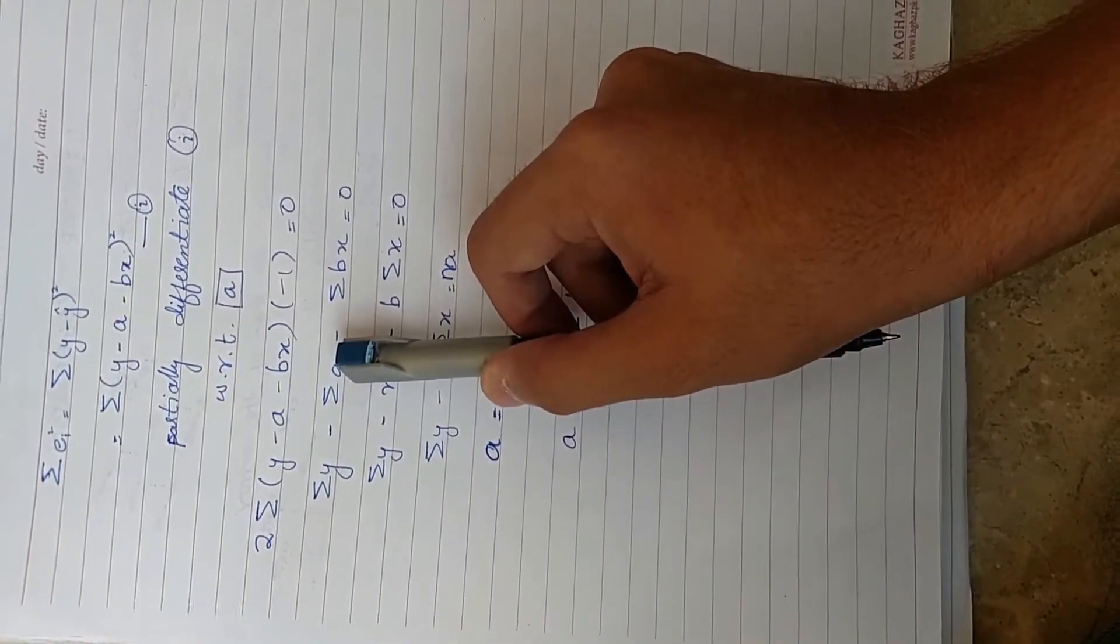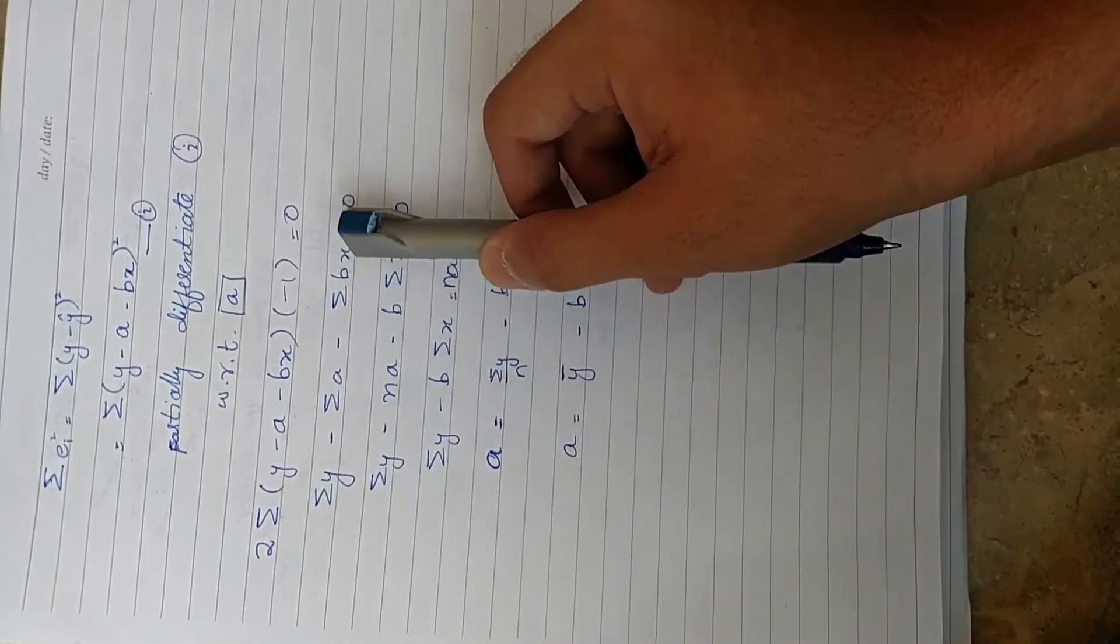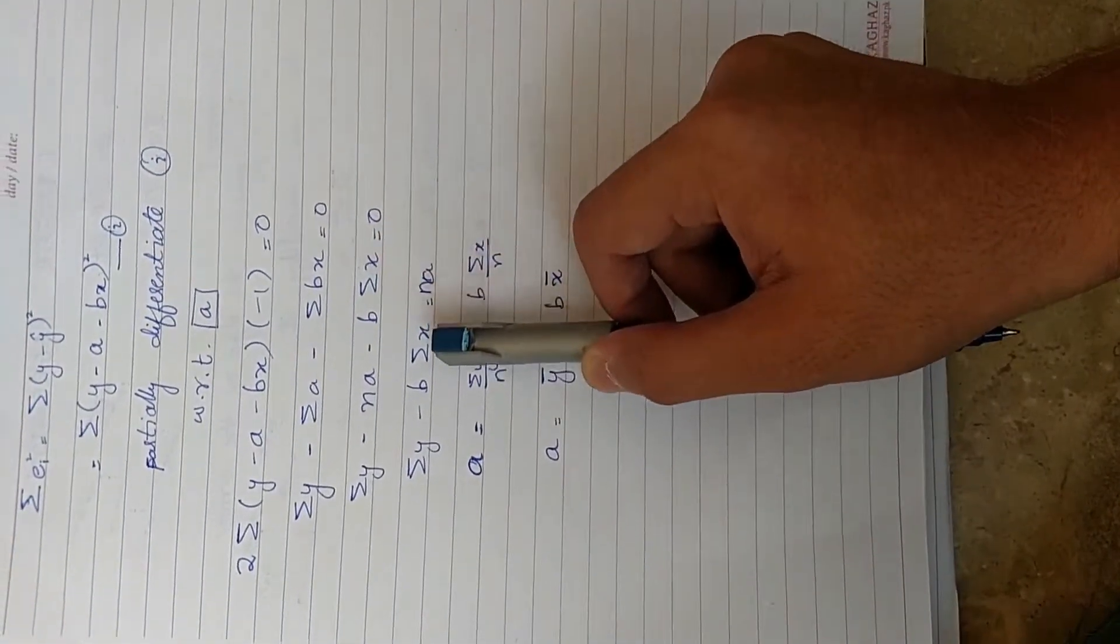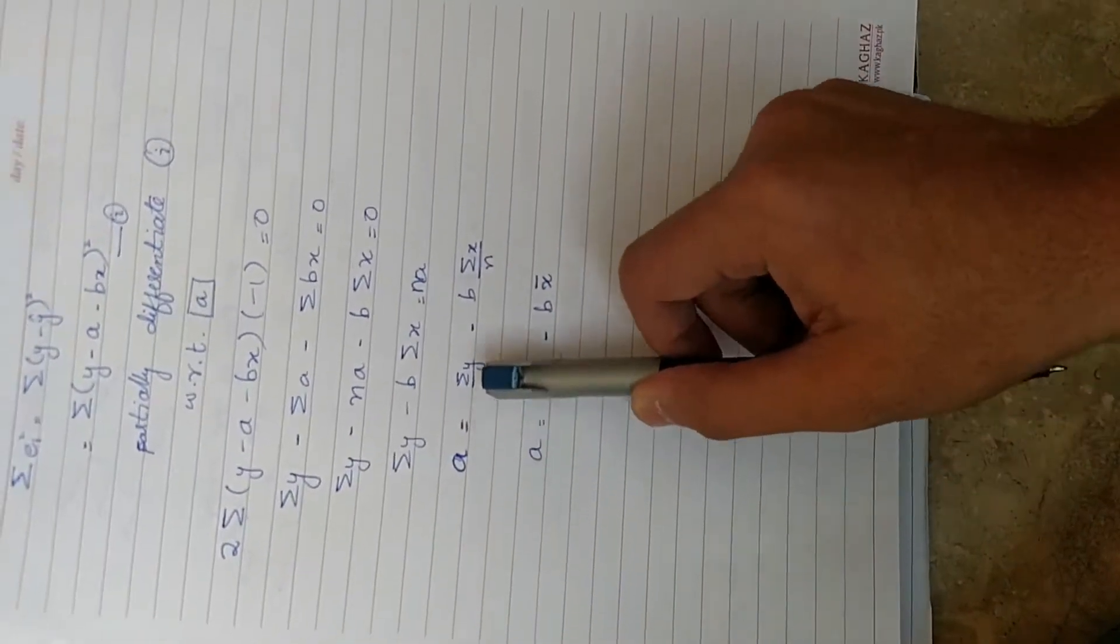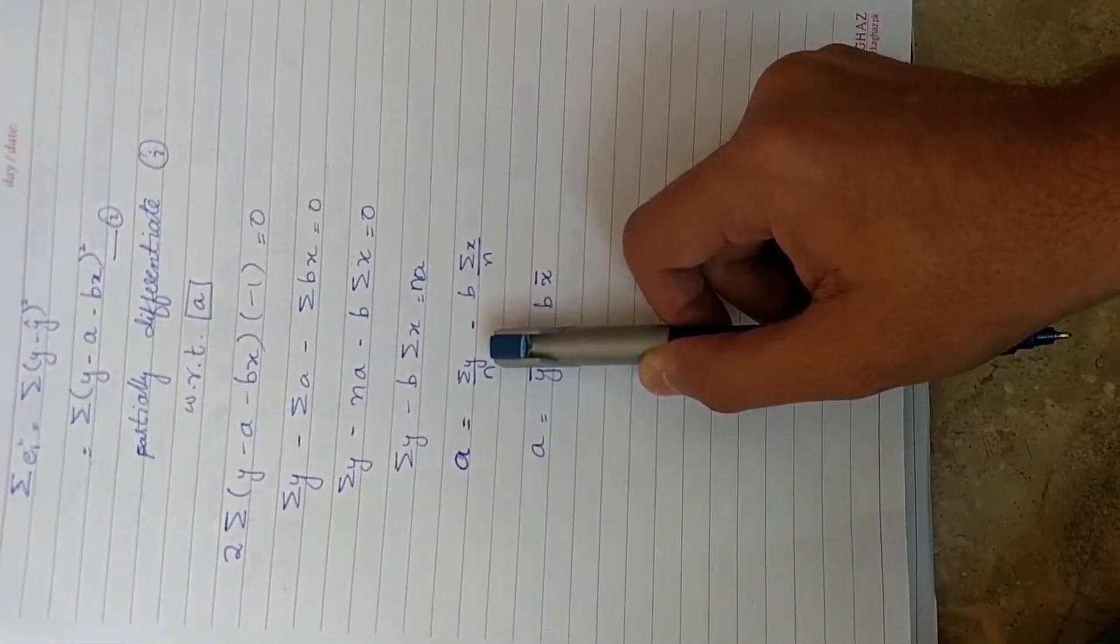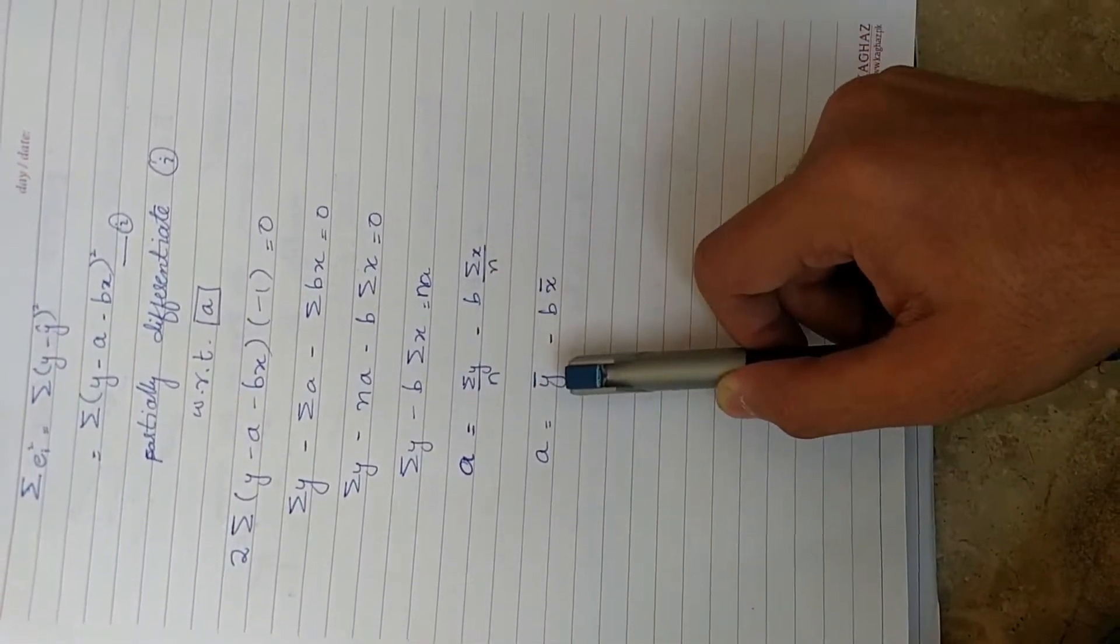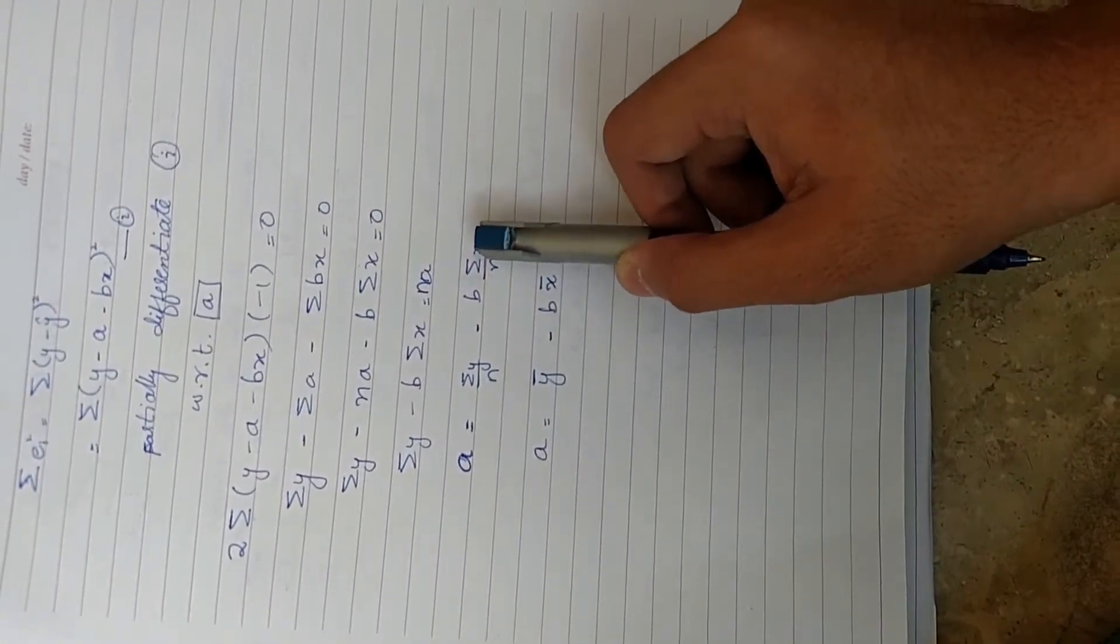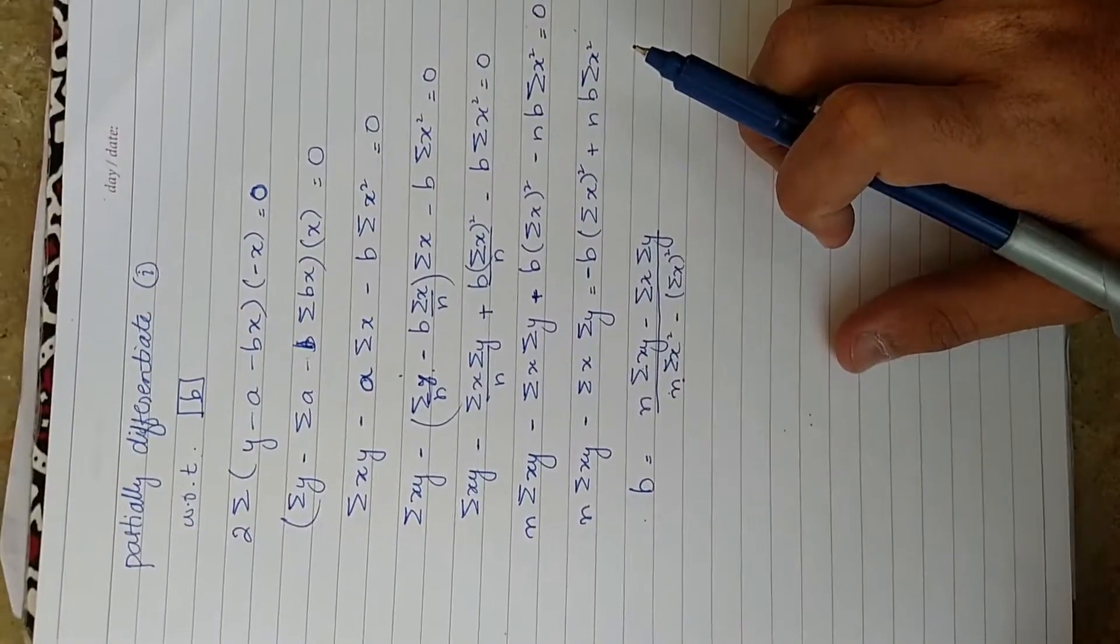So we do this and take the constant out of the summation. After simplifying, we get a equals summation of y divided by n minus b times summation of x divided by n, which is a equals mean of y minus b times mean of x.